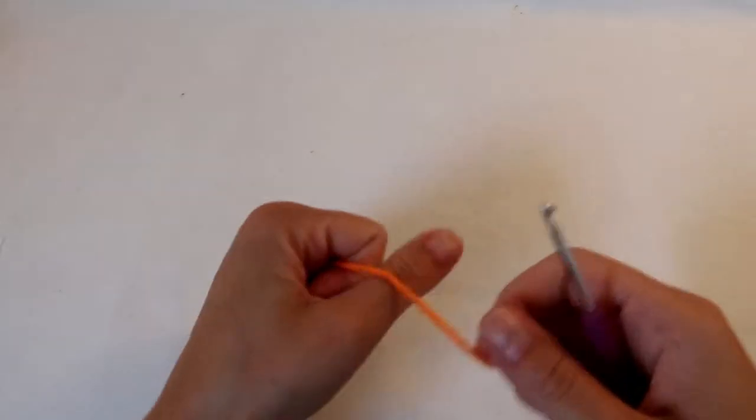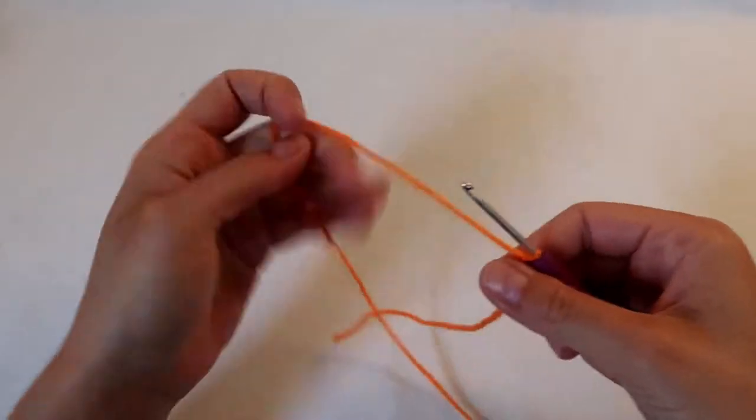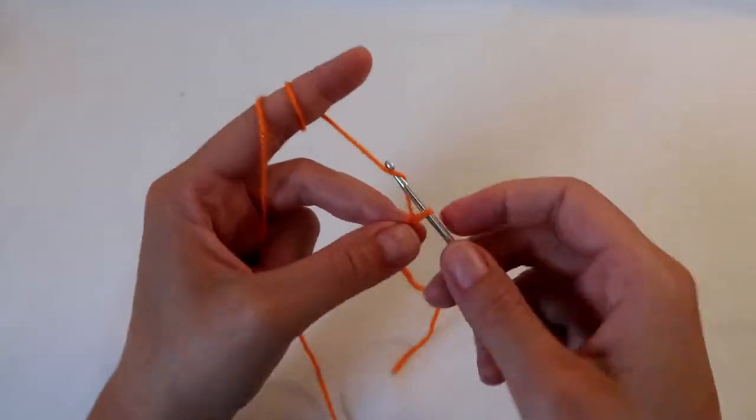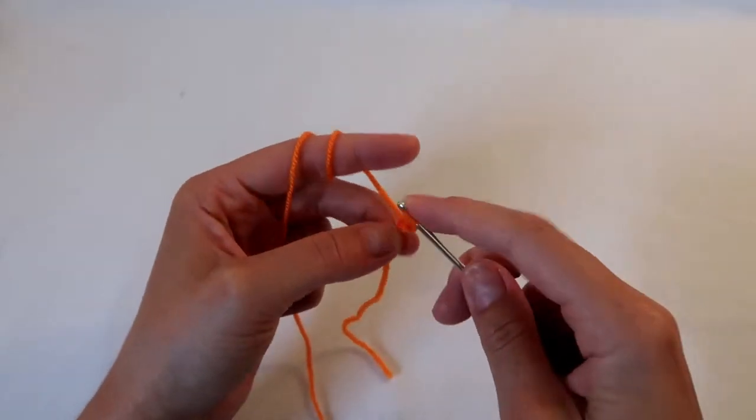I'm going to start in the usual way, so I'll do my slipknot, chain 2, and then do 6 double crochets in the second chain from the hook.